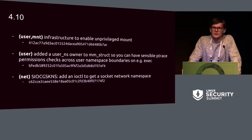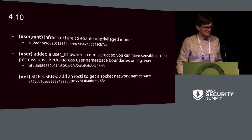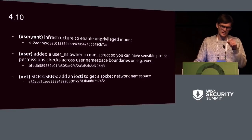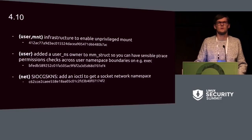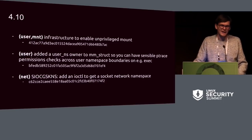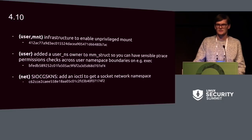Covering kernel versions 4.10 to 4.18. In 4.10 there was a lot of work by Eric and Seth and others to put infrastructure in place to enable mounts from non-initial user namespaces — something not previously possible for interesting filesystems. You can mount tmpfs inside a user namespace, but mounting ext4 is still not possible, though technically the infrastructure is there. You can do it with FUSE, though. Eric also added a new user namespace owner to the mm struct for sensible ptrace permission checks across exec — a long-standing security issue.